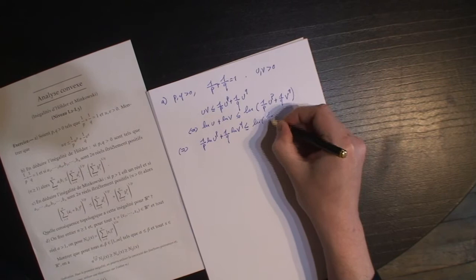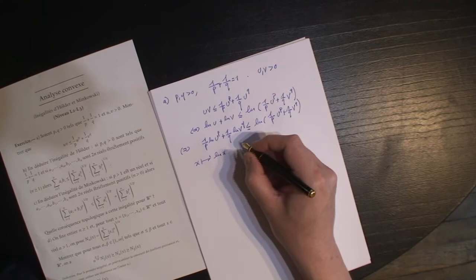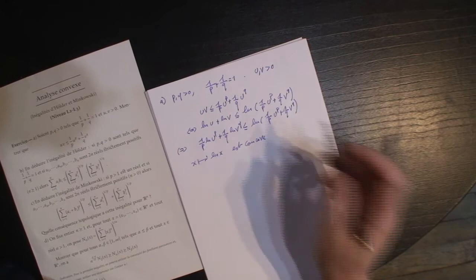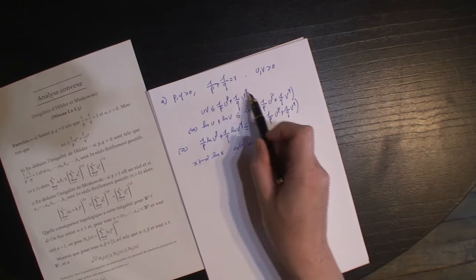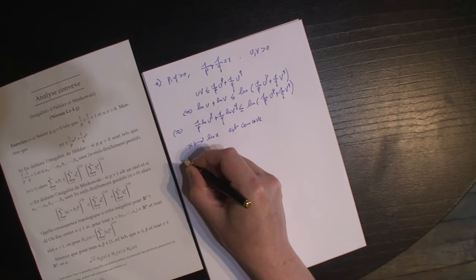Mon équation est équivalente à celle-là. Le point c'est que le logarithme, dont la dérivée seconde est égale à −1/x², est concave. C'est l'inégalité de concavité — c'est l'inégalité très célèbre qui découle de l'étude de la fonction log.